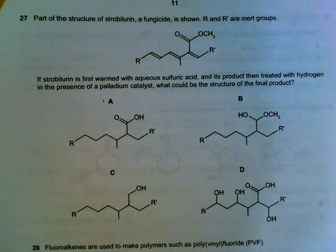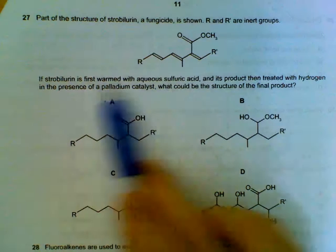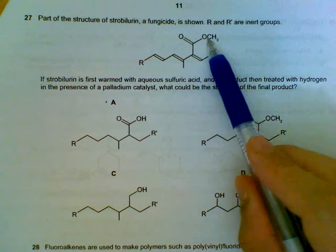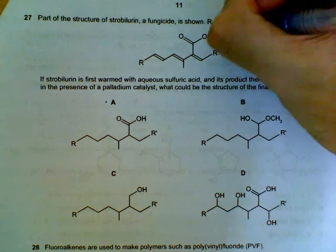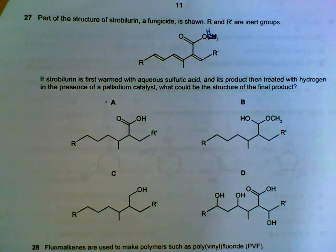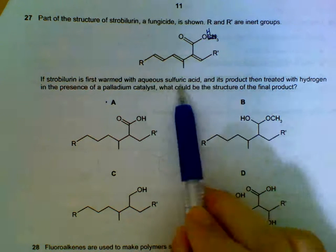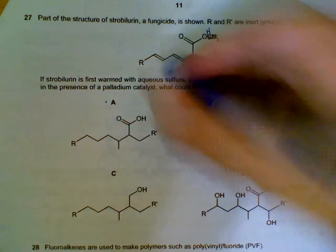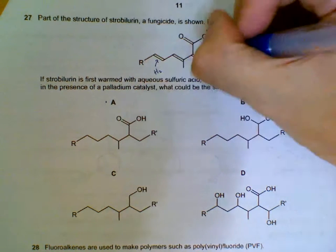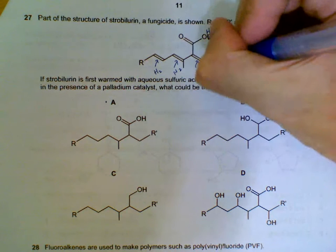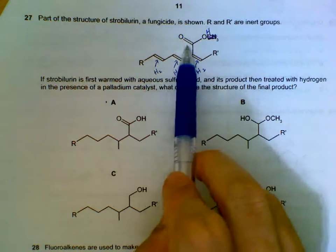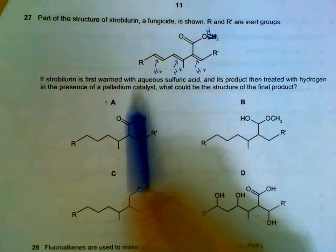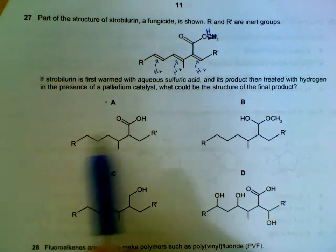Number 27: the product is first warmed with dilute sulfuric acid. Notice there is an ester (COO) group; when hydrolyzed with acid, the COO becomes COOH — that is the first part. After that it is treated with hydrogen with a catalyst, so the hydrogen attaches itself to the double bonds, hydrogenating the alkene bonds. It does not affect the acid group, only the alkene, and the compound becomes saturated. So the answer is A.